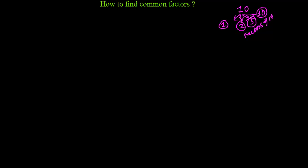Today we are going to learn what common factors are. When we say 'common,' it means mutual — so there should be at least 2 or more numbers involved. Here, I'm giving you the numbers 12 and 15, and we have to find out the common factors between them.